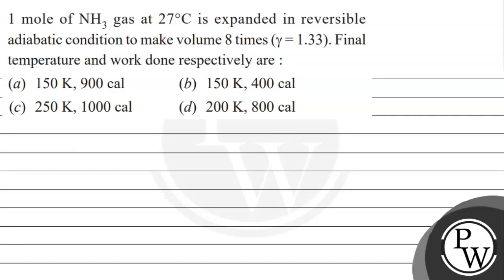Hello, let's read this question. 1 mol of ammonia gas at 27 degrees Celsius is expanded in reversible adiabatic conditions to make the volume 8 times. Gamma is equal to 1.33. We need to find the final temperature and work done respectively, given the following options.